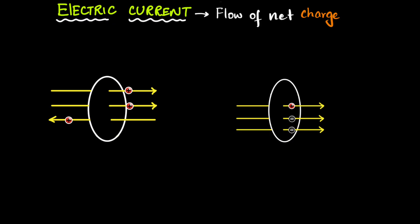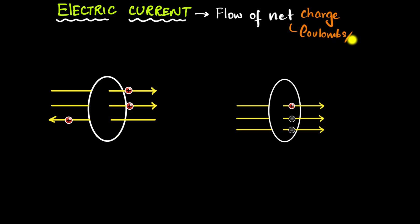So current is a flow of net charge, but how do you measure it? We measure it as the amount of charge flowing through any given cross-sectional area per second — Coulombs per second. Coulombs per second is also called amperes, written as capital A.